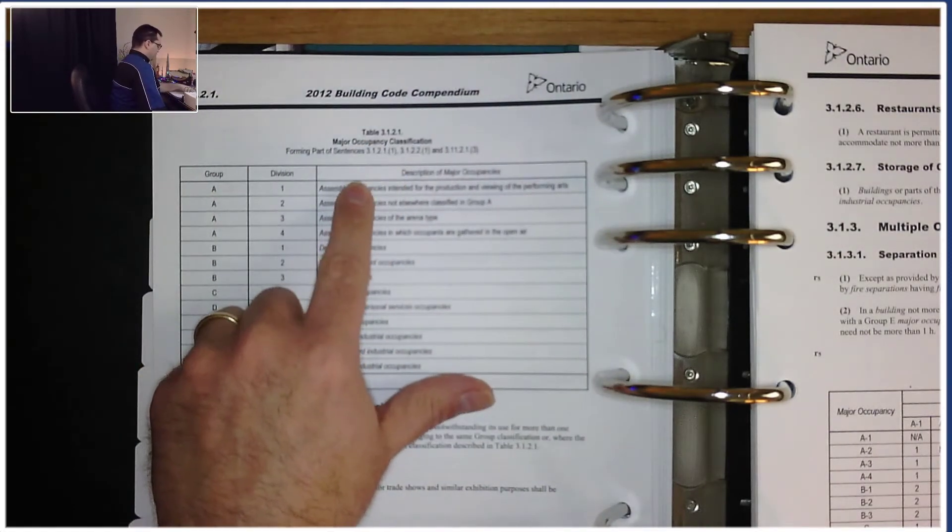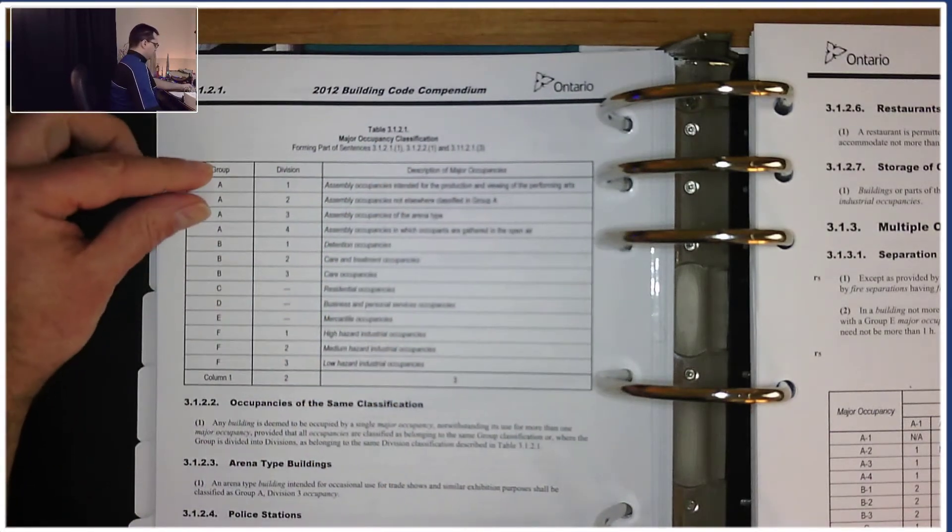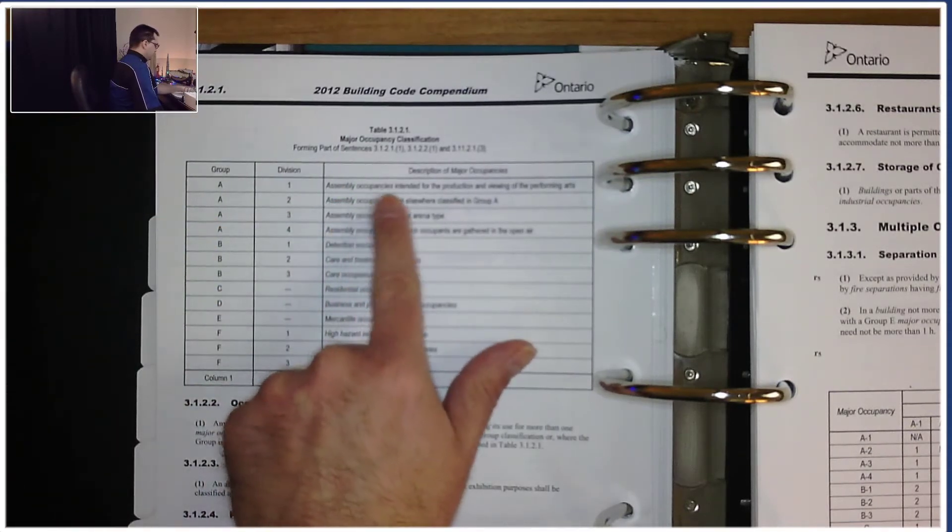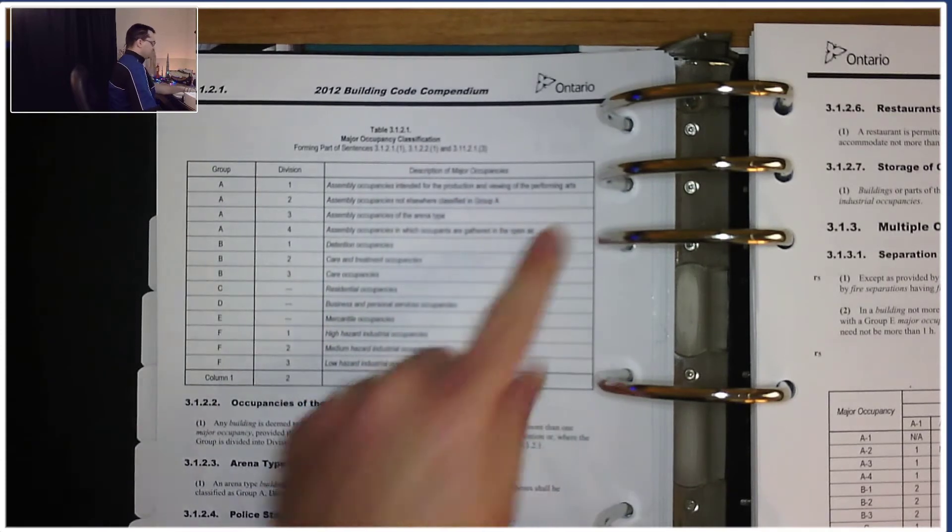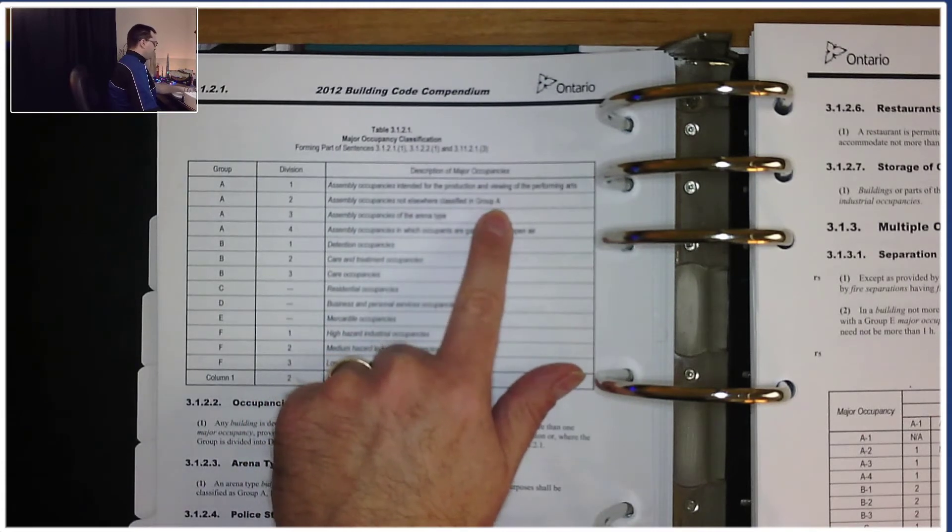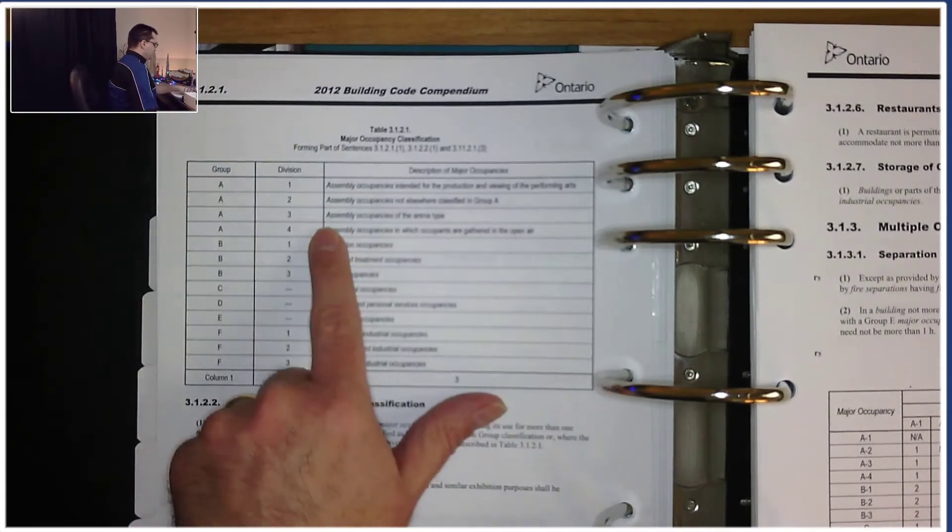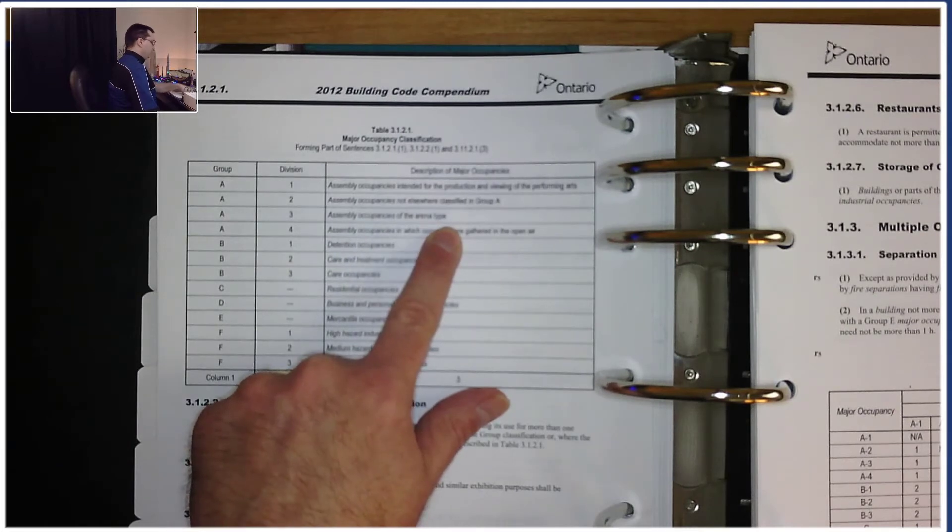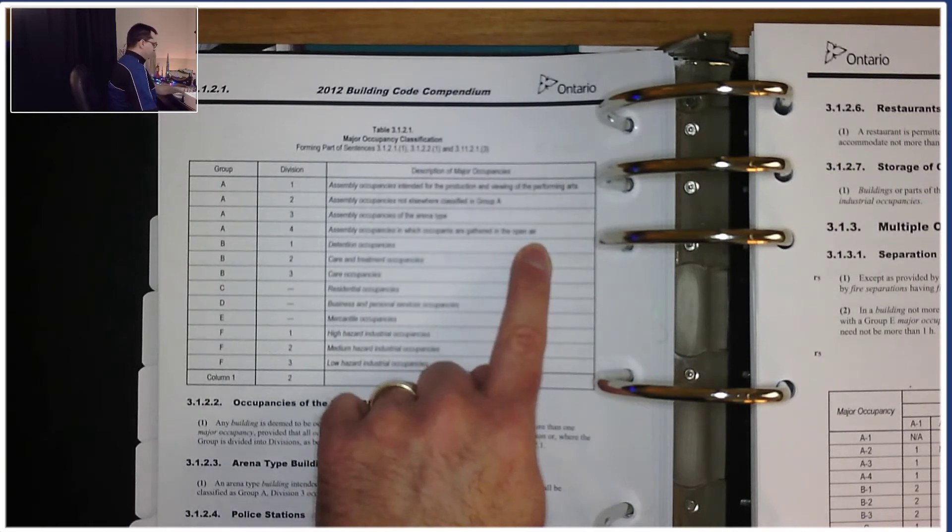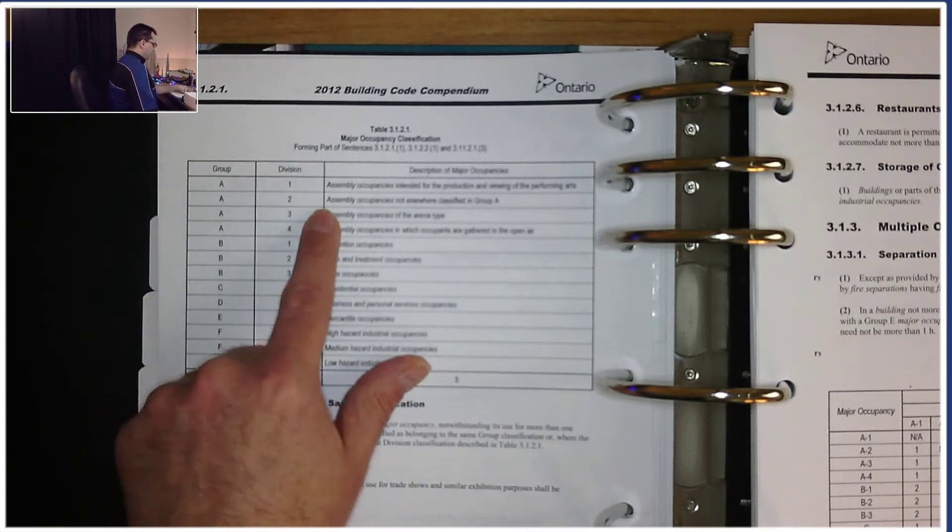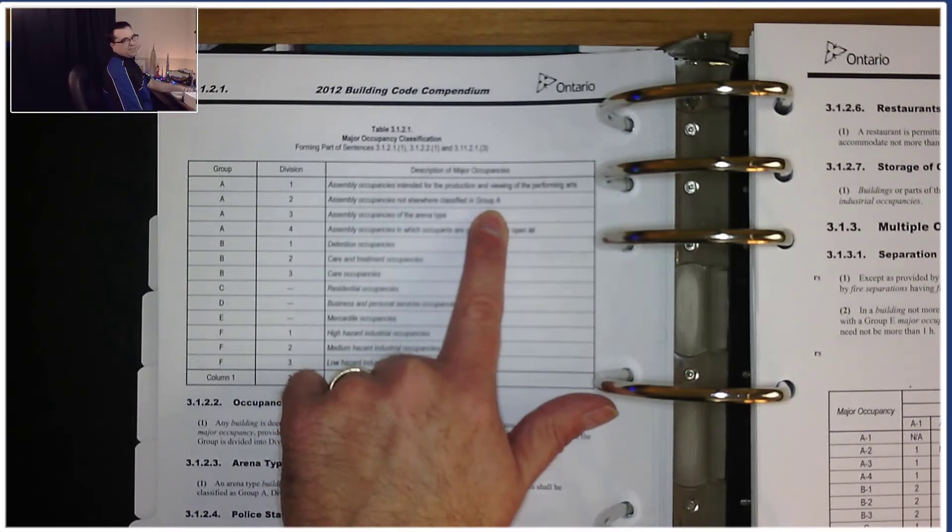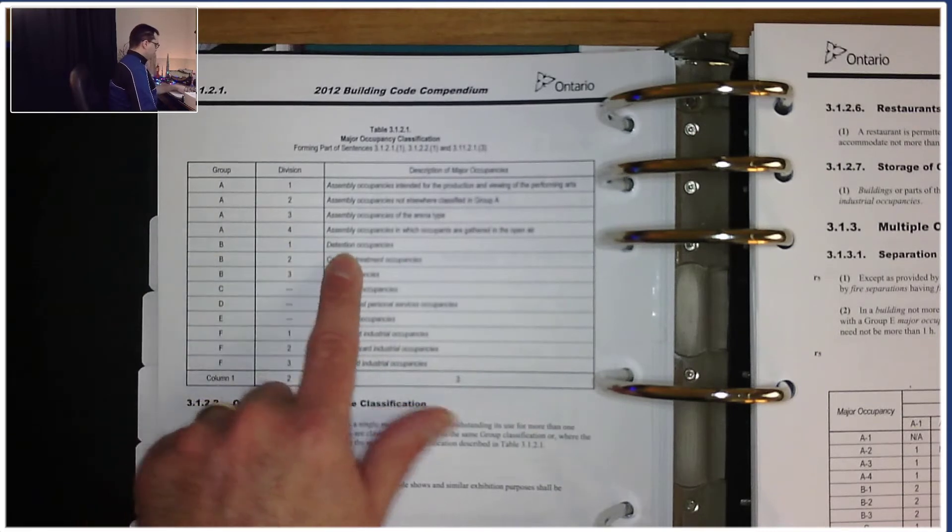I'm going to read the description of the major occupancy and see which one matches police stations, then I'll know the group and if necessary that division. We're going to read top to bottom. First we have assembly occupancies - not a police station. Assembly occupancies not also classified in group A - we'll come back if we don't find anything else.